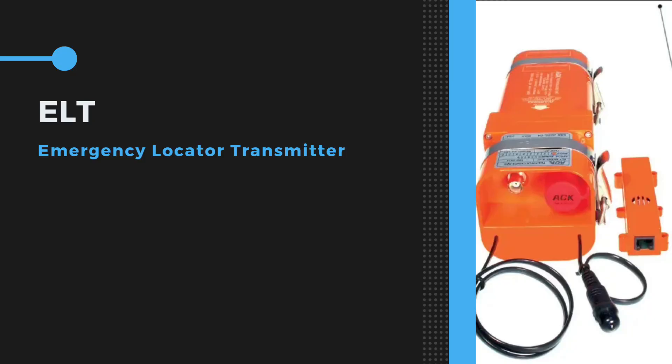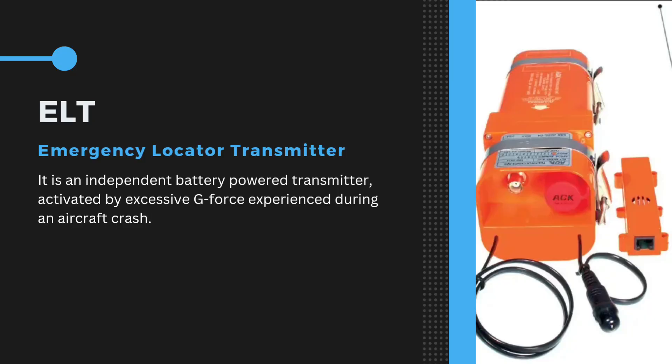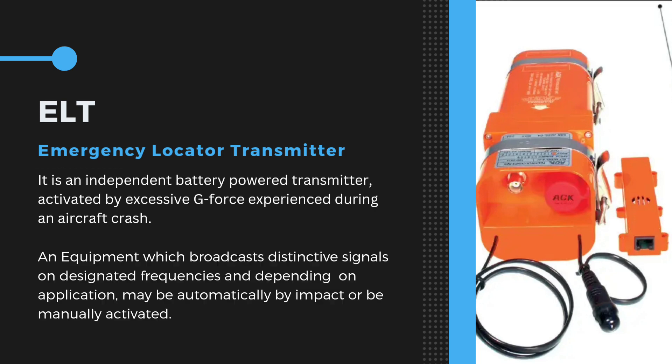An ELT stands for Emergency Locator Transmitter, which is an independent battery-powered transmitter activated by excessive G-forces experienced during an aircraft crash. ICAO defines an Emergency Locator Transmitter as equipment which broadcasts distinctive signals on designated frequencies and, depending on application, may be automatically activated by impact or be manually activated.